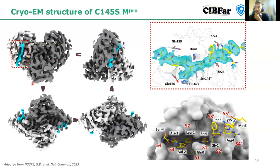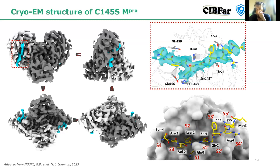However, we didn't solve the tetramer we were expecting despite the sample being a tetramer. Instead we found the dimer in solution — the protein showing these dimeric heart-shaped characteristic of M-pro. There was clear density in the active site that took us a while to understand, but it was actually the N-terminal part of M-pro — a unique structure outside the constraints of the crystal environment.